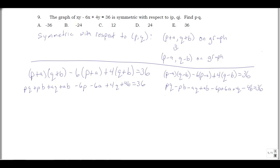A lot of these terms are the same on both sides — particularly the ones that don't involve a or b, or have an even number of a's and b's. So pq matches up in both, ab matches up in both, minus 6p matches up in both, plus 4q matches up in both, and the 36's are the same. Moving all the underlined matching terms to the right-hand side, I get: pb plus aq minus 6a plus 4b equals 36 minus pq minus ab plus 6p minus 4q.